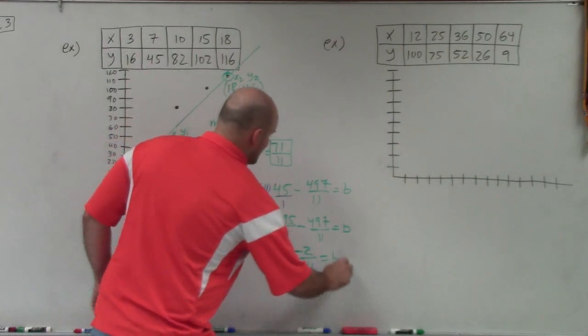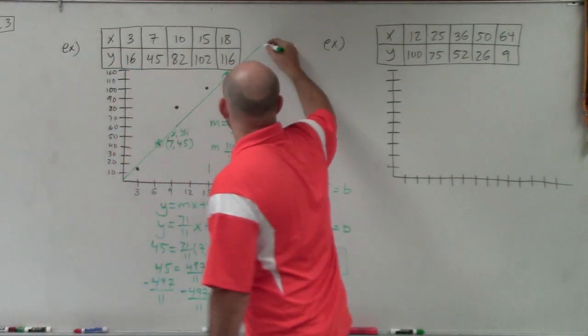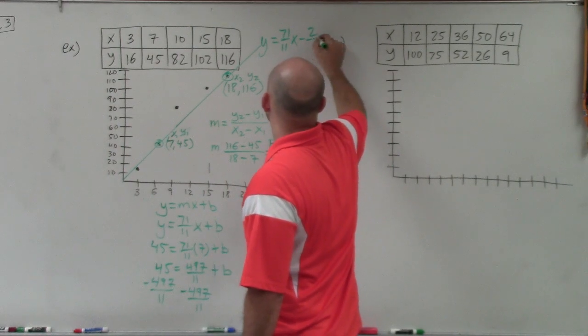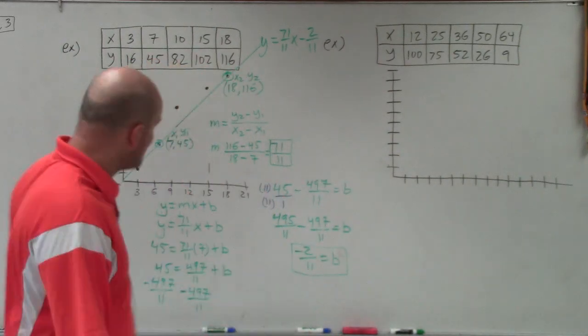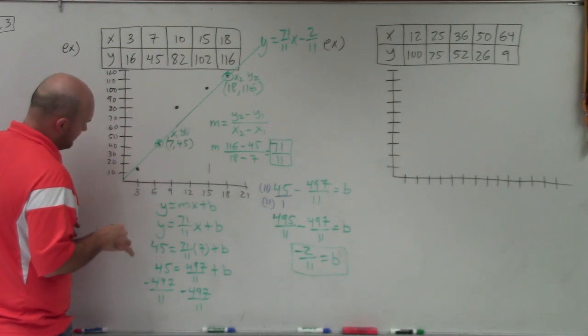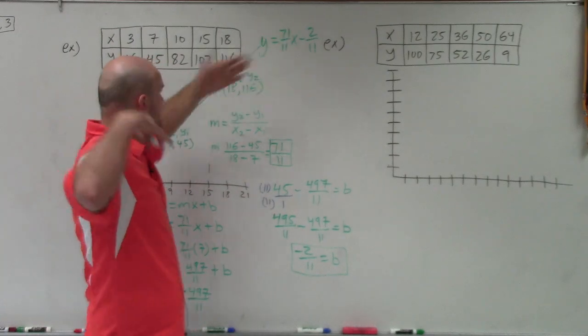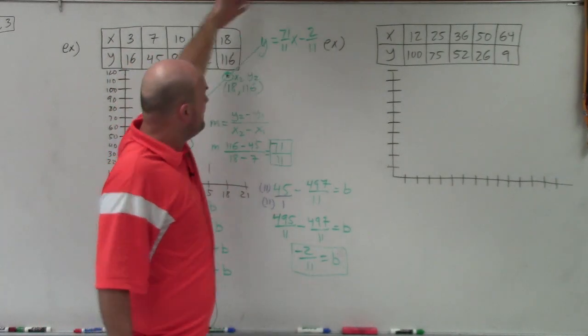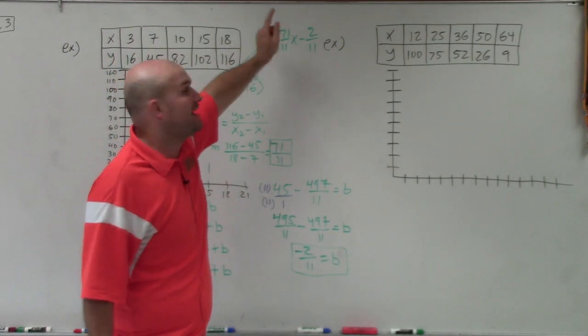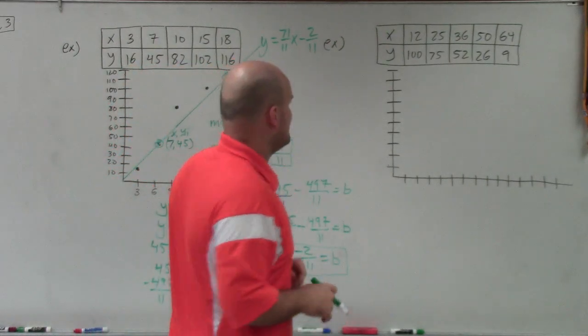So now, I have found my y-intercept and I found my slope. So therefore, the equation of my line, this best fit line, is going to be y equals 71/11 x minus 2/11. So what's nice about having the equation, because yes, the best fit line helps you with the trend on the graph. But what if I wanted to say, well, what about when x is 300? Well, then, if I want to find y, I can plug 300 in for x and solve for y. That's why being able to determine what the best fit line can be so important.